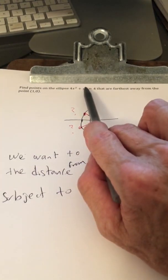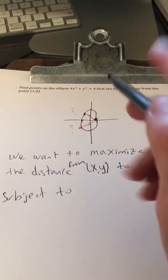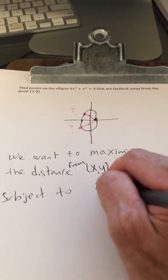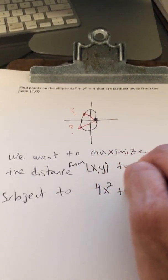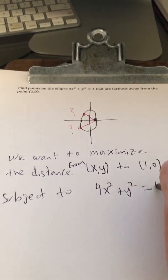Well, the constraint is we have to be on the ellipse, that's the constraint, so it's subject to 4x squared plus y squared equals 4.